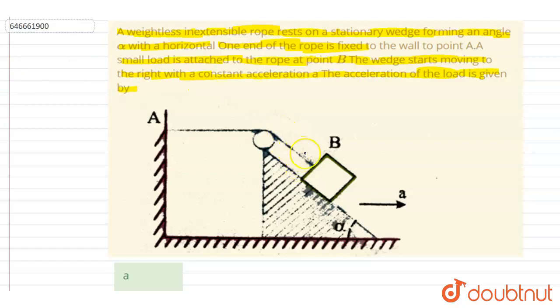So if you see the acceleration of this block with respect to the wedge, let's say I put an observer here. Let's say this length is l1 and this length is l2. So the total length will remain constant, right? So what you will do: you will make l1 plus l2 equals constant, and if you differentiate it both sides, it will be zero.